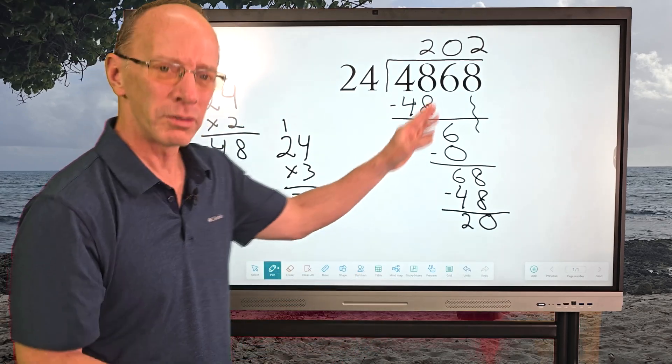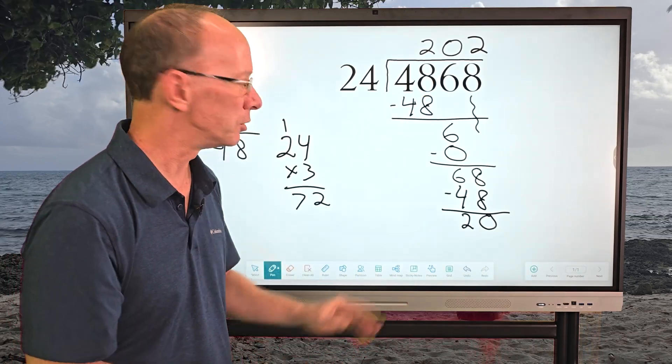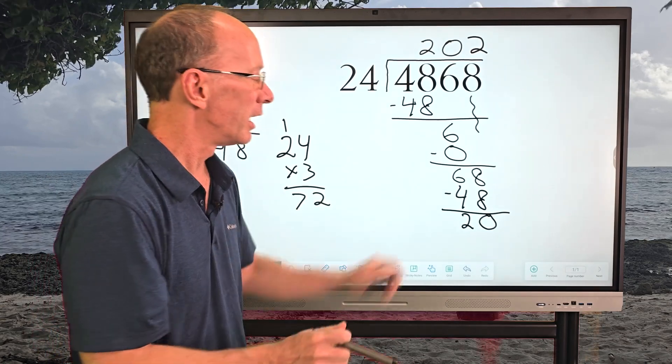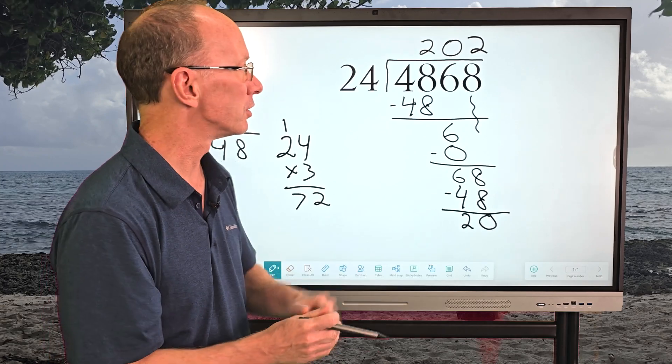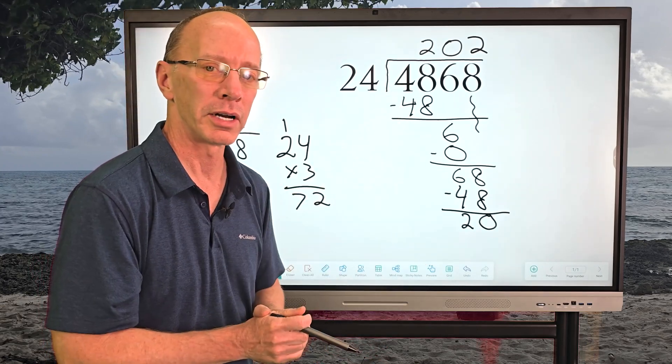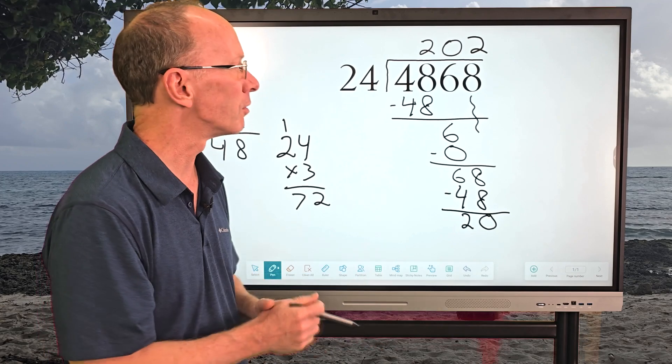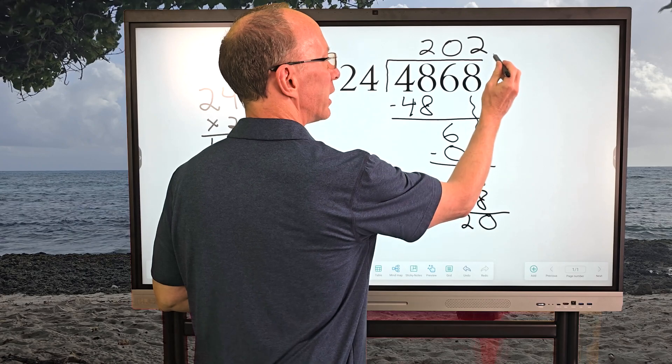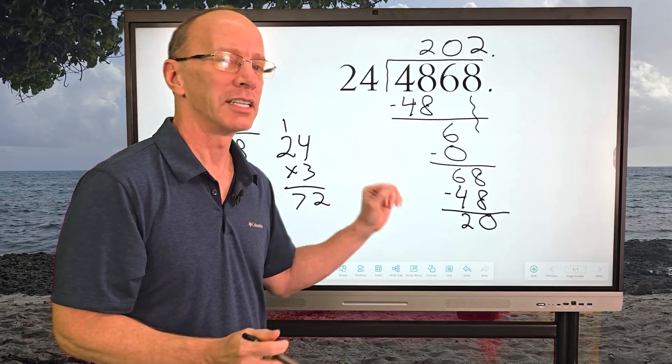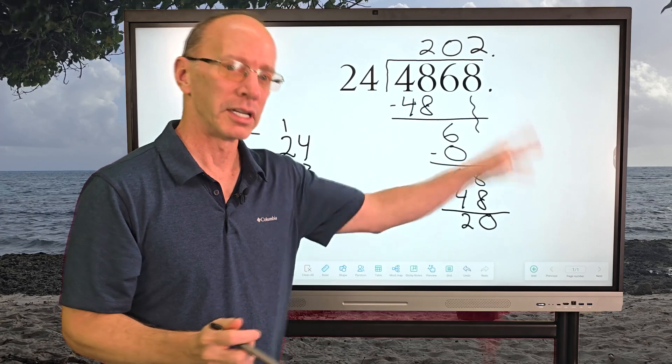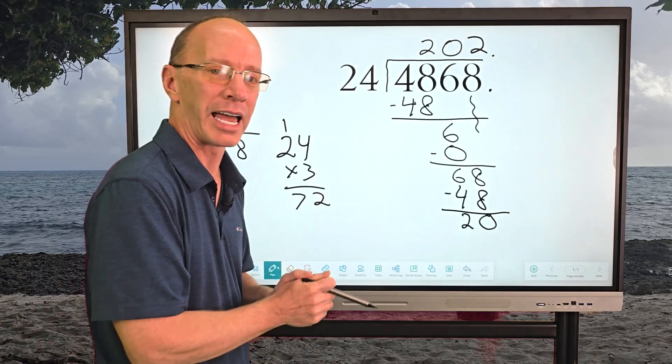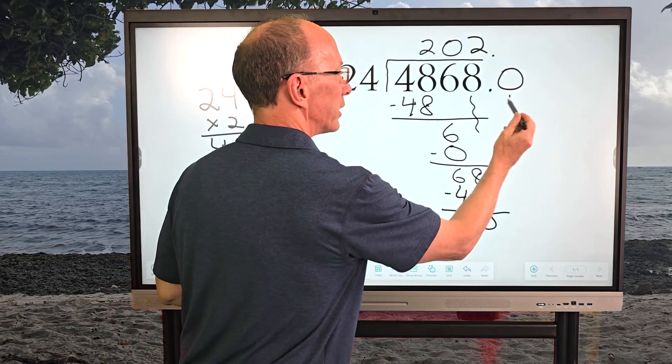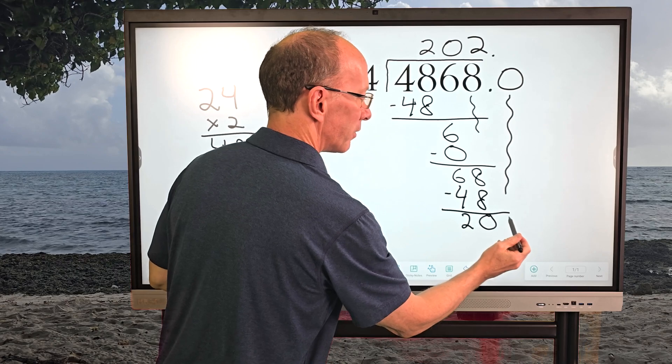And now I don't have any other numbers to bring down. And if we don't want to turn this into a decimal, this would be our remainder. So it would be 202 with a remainder of 20. Let's see if we can add some numbers with a decimal. So I'm going to put a decimal point here and right here. And when you put a decimal, it does not matter how many zeros you put on the other side. You can add as many zeros you want to.